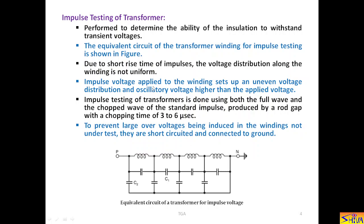Impulse voltage applied to the winding sets up an uneven voltage distribution and oscillatory voltage higher than the applied voltage. Because here it is capacitive network. So, due to the presence of this capacitance voltage increases along the winding. It becomes more than the applied voltage.